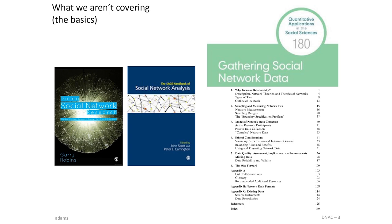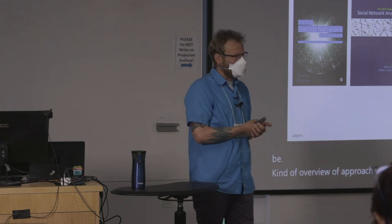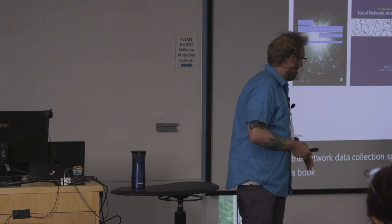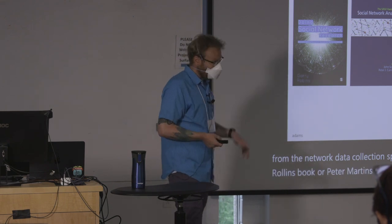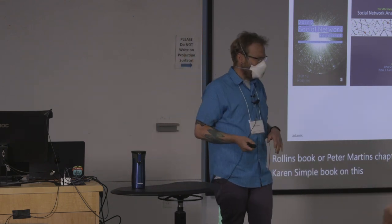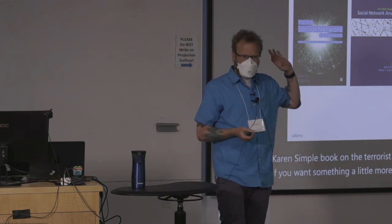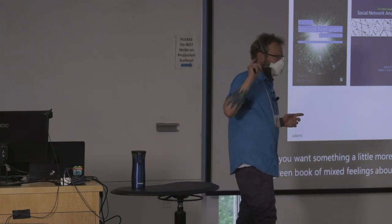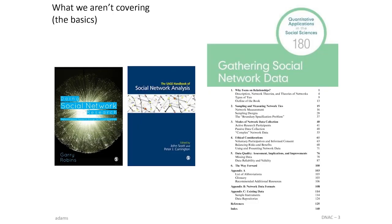This is not going to be an overview of approaches. If you're looking for those in the network data collection space, I recommend chapter-length treatments in Gary Robbins' book, or Peter Marsden's chapter in Scott and Carrington's book — there's actually a revised version of that coming out this year. If you want something more in-depth, there is a Sage little green book. I have mixed feelings about that one — I wrote it. As soon as a book comes out, there are things you want to change.